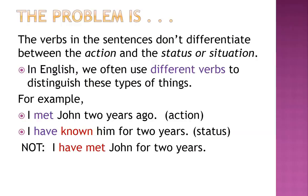In English, we often use different verbs to distinguish these types of things. For example, 'I met John two years ago' — the verb is referring to an action which occurred at a specific time. 'I have known him for two years' — the verb 'have known' is referring to a status which occurs over a long period of time. We do not say, 'I have met John for two years.'